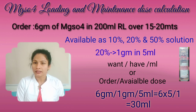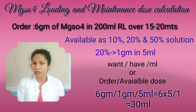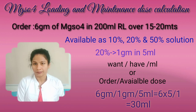So to take 6 grams of magnesium sulphate, we have to add 30 ml of the 20% magnesium sulphate solution to 200 ml of normal saline or RL.